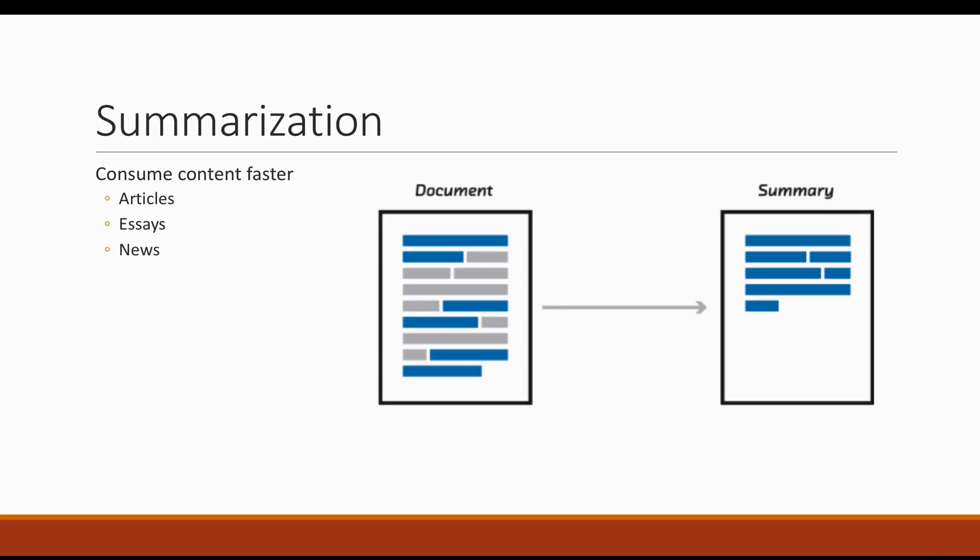Summarization is an interesting use case of natural language processing. The goal of summarization is to take a large chunk of text and shorten it. You can apply this to sentences or paragraphs. You want to do this because you want to help humans consume content faster. So if you're someone whose job depends on consuming content faster — be it a researcher, a journalist, or a writer — summarization can be a very useful tool which lets you crawl through research articles, news articles, etc., much more quickly.